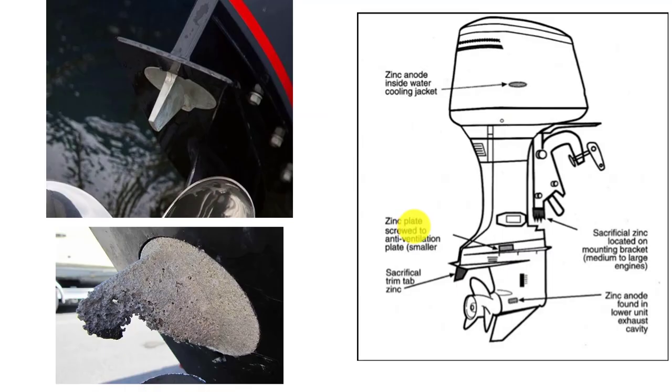Another place we see galvanic cell set up is something like a boat engine where we have aluminum or magnesium housings, and those are going to tend to corrode pretty quick. So what we'll do is put a sacrificial anode. We're going to come in here and put some zinc on strategic places on the motor.